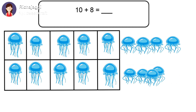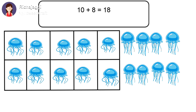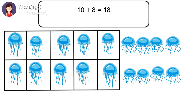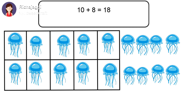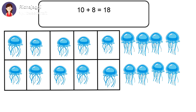10 plus 8 is equal to how many? To find out the total number of jellyfish, we will count all of them. 1, 2, 3, 4, 5, 6, 7, 8, 9, 10. 10 jellyfish in the box. 11, 12, 13, 14, 15, 16, 17, 18. So total number of jellyfish are 18. There are 18 jellyfish in all.